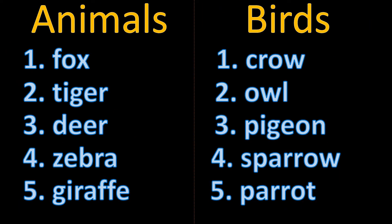Students, we have divided the creatures into two categories: animals and birds. Let us first see the names of animals: fox, tiger, deer, zebra, giraffe. Now the names of birds are: crow, owl, pigeon, sparrow, parrot. Dear students, this is the end of chapter 3, names of animals and birds, and I hope the chapter is clear to all of you.